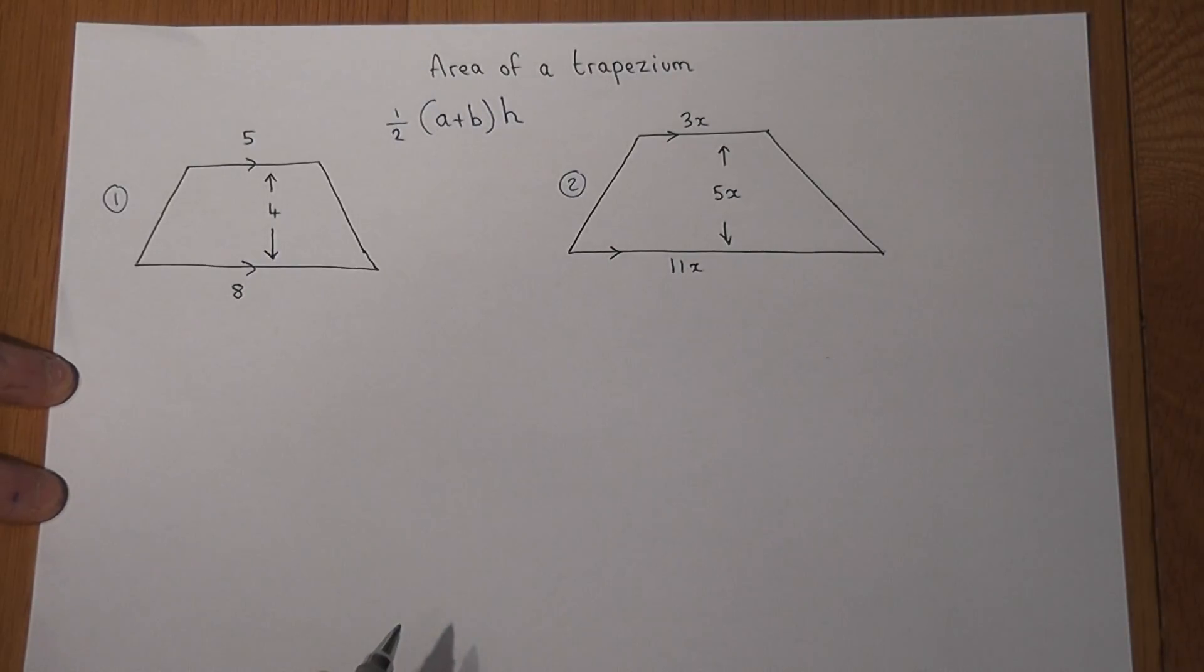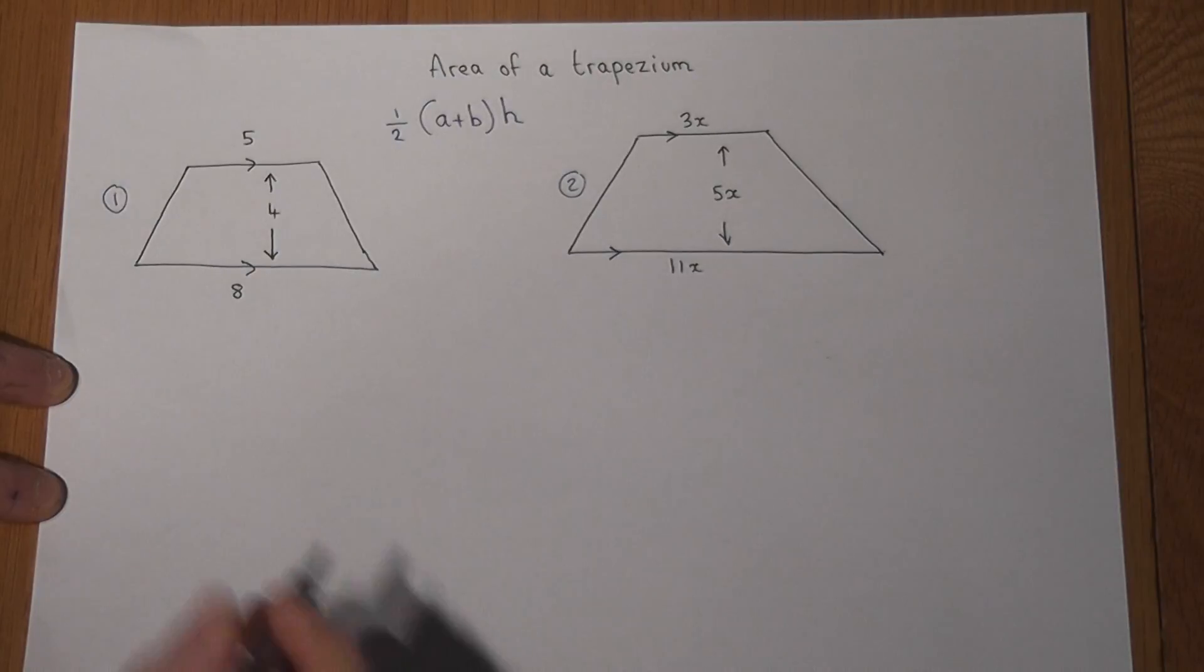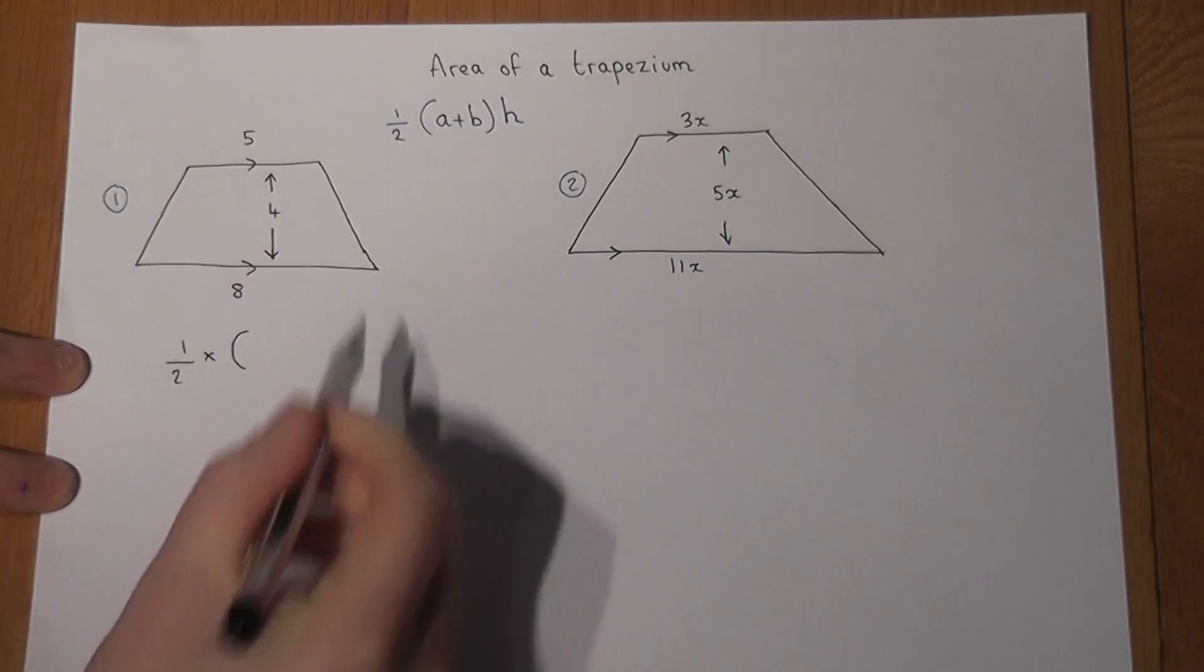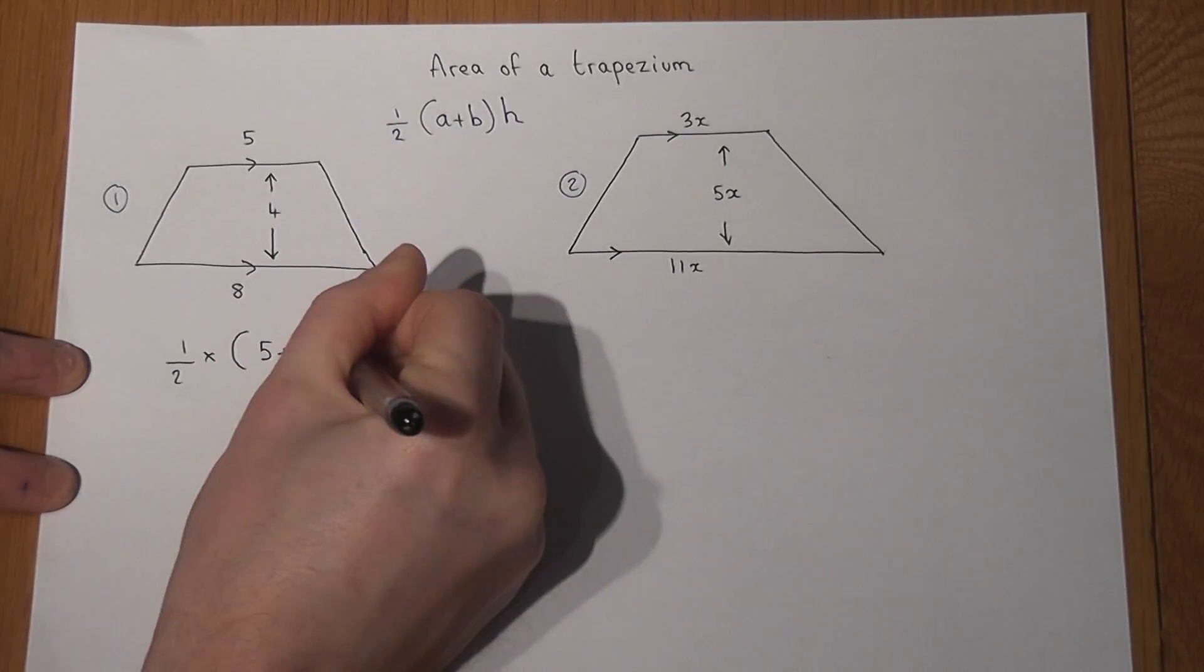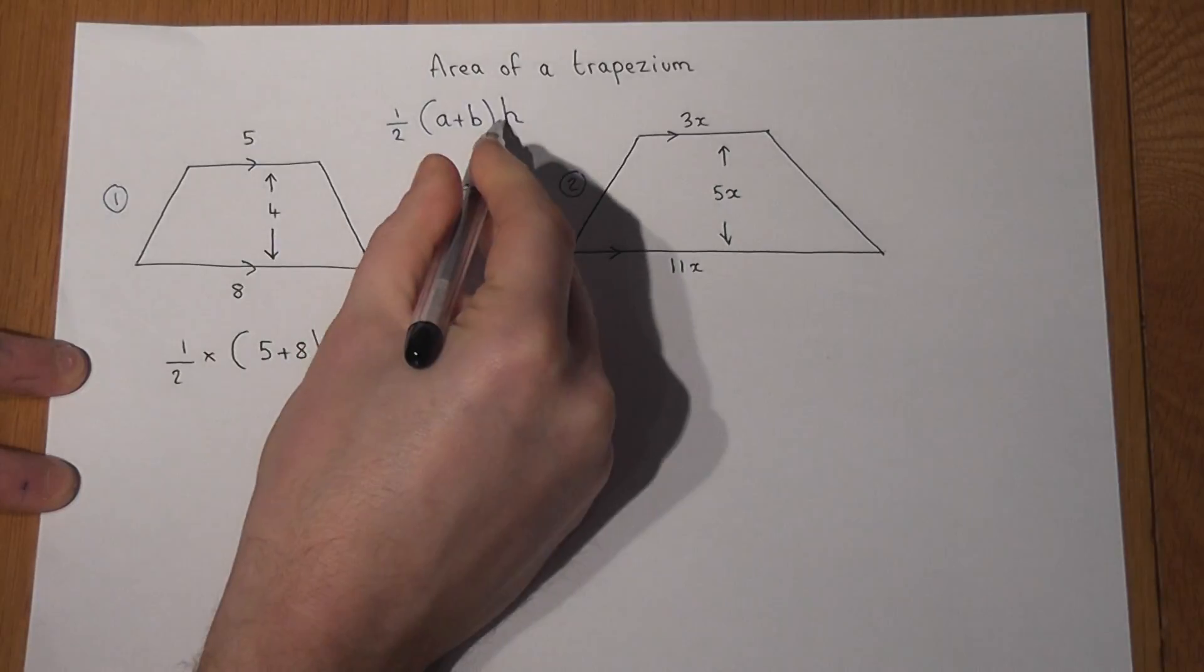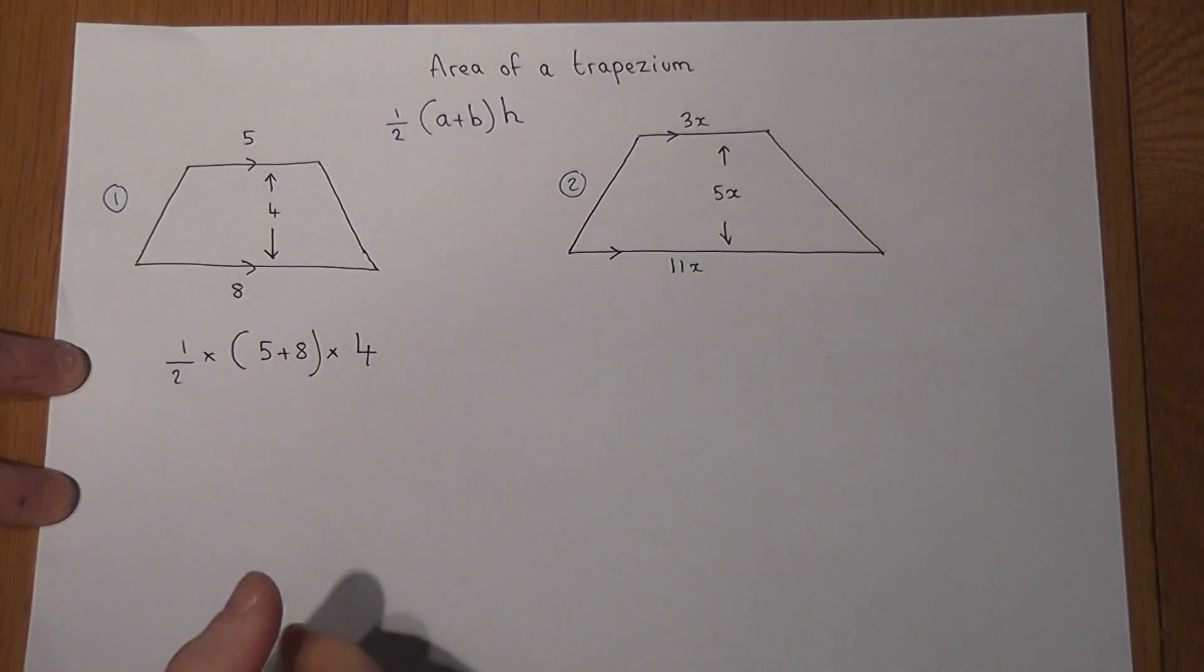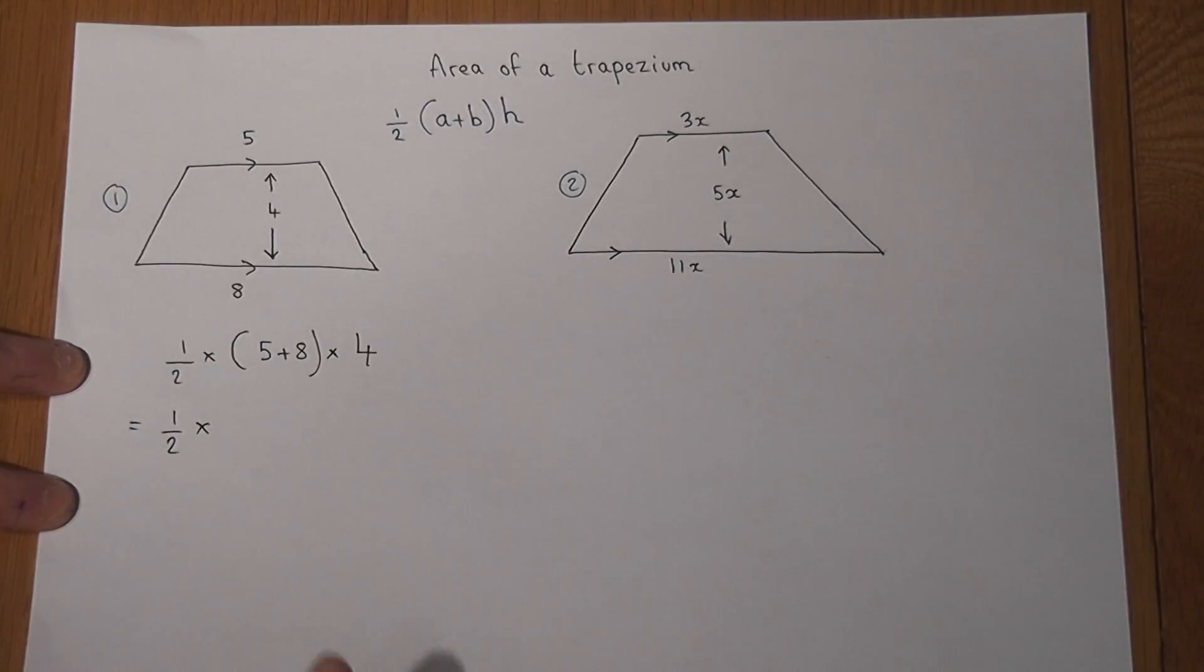To find the area of the first trapezium, it's a simple matter of putting those numbers into that formula. There's one half times (a plus b), five plus eight, times by the h, which in this case is just four.